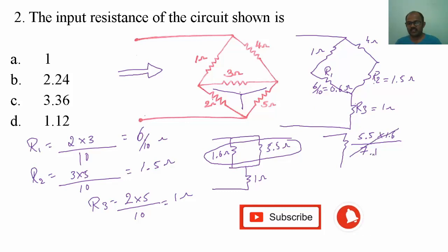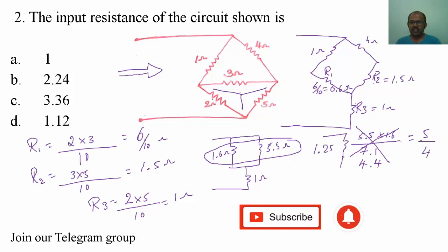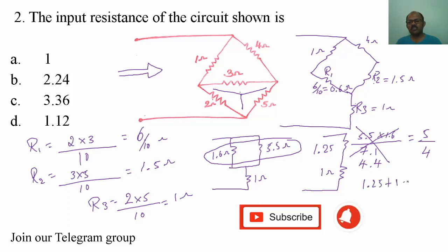Working through the arithmetic, I get approximately 5 divided by 4, which is 1.25 ohms. In series with that there is one more resistor of 1 ohm, so 1.25 plus 1 equals 2.25 ohms as the final equivalent resistance.